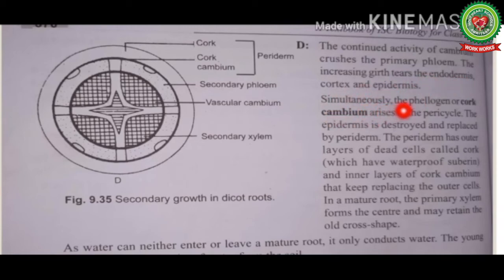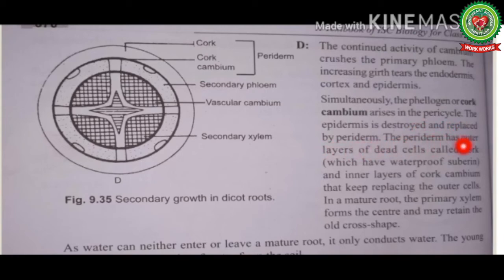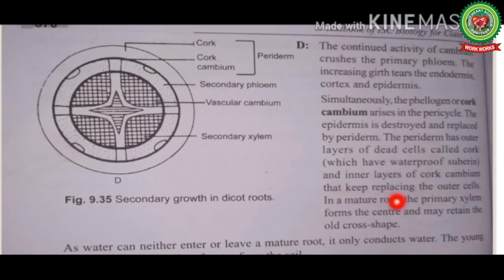Simultaneously, the phellogen or cork cambium arises in the pericycle. The epidermis is destroyed and replaced by periderm. The periderm has an outer layer of dead cells called cork, which contain waterproof suberin, and an inner layer of cork cambium that keeps replacing the outer cells. In a mature root, the primary xylem forms the center and may retain the old cross shape.